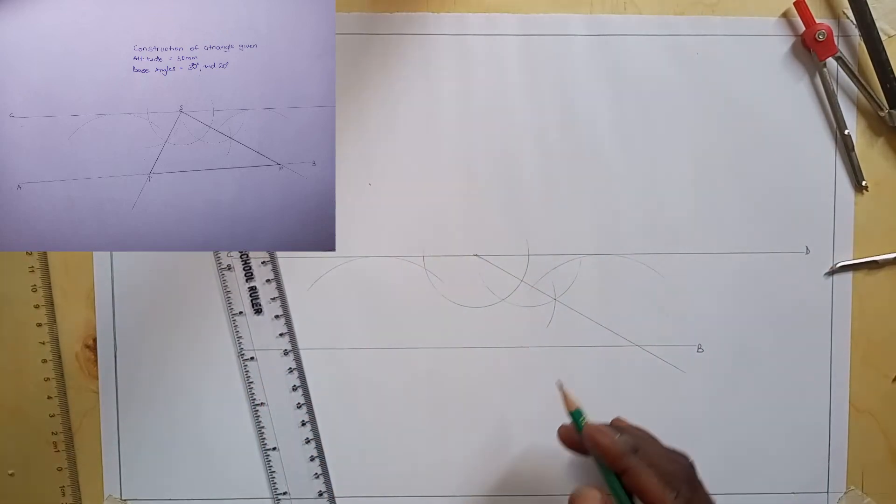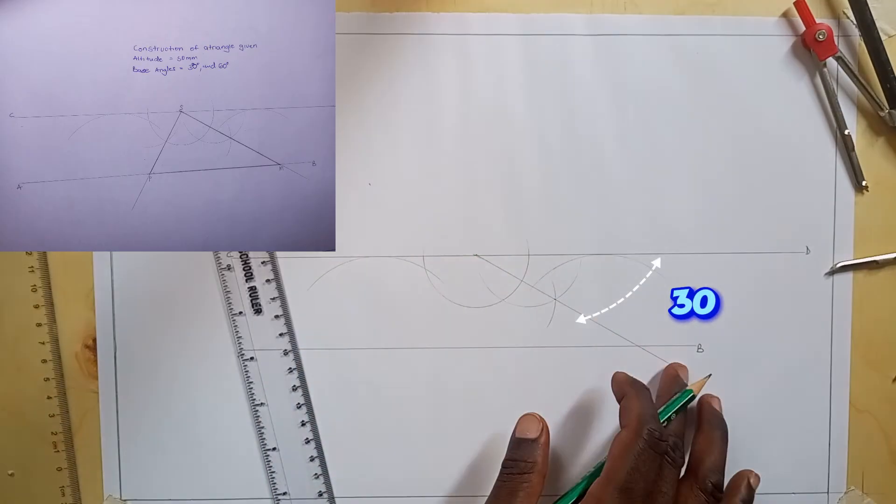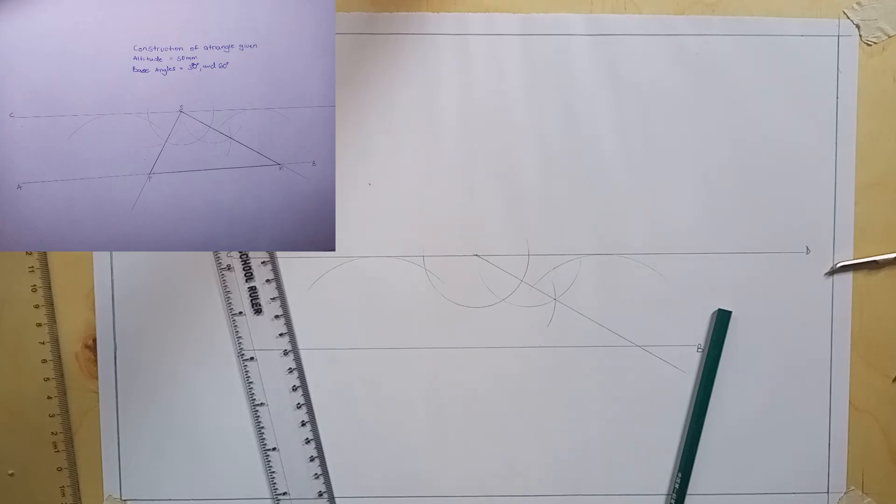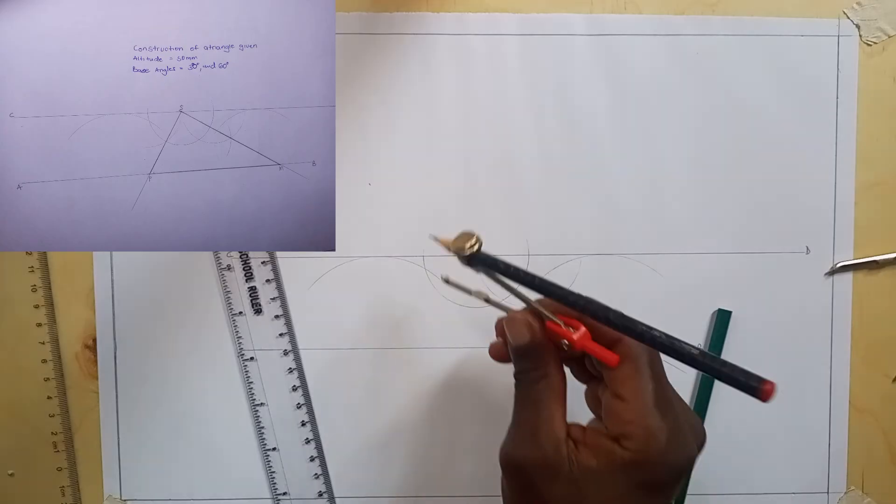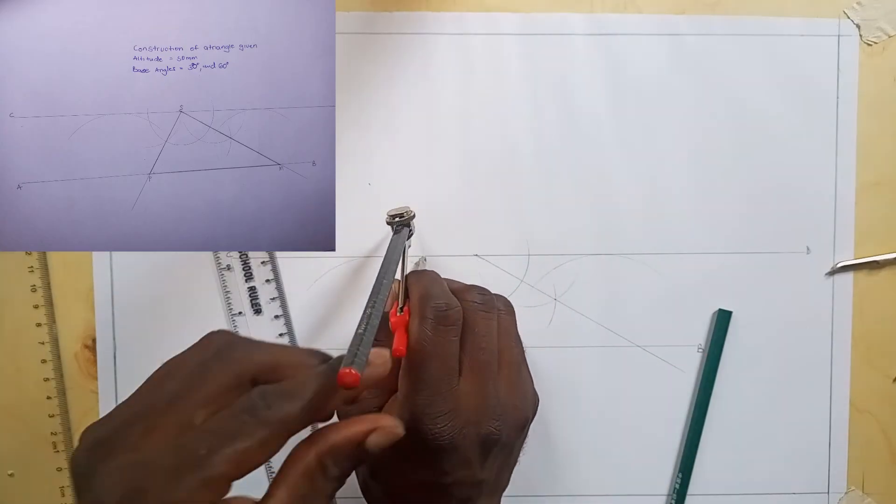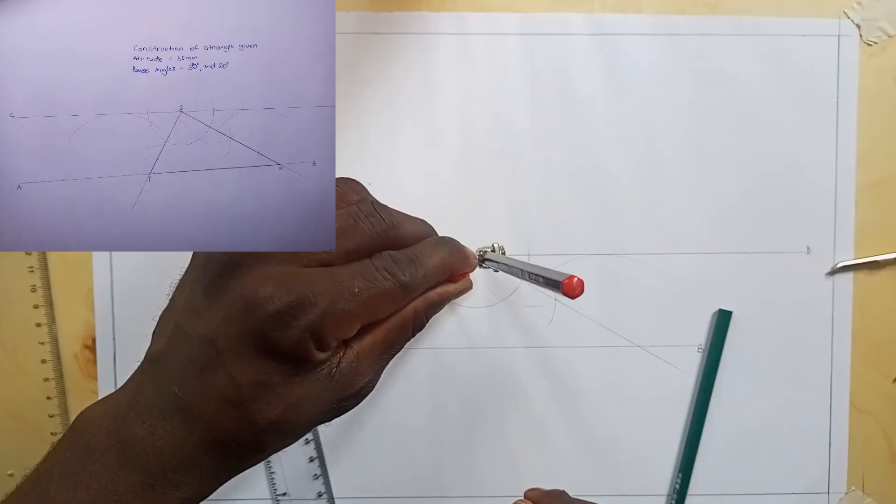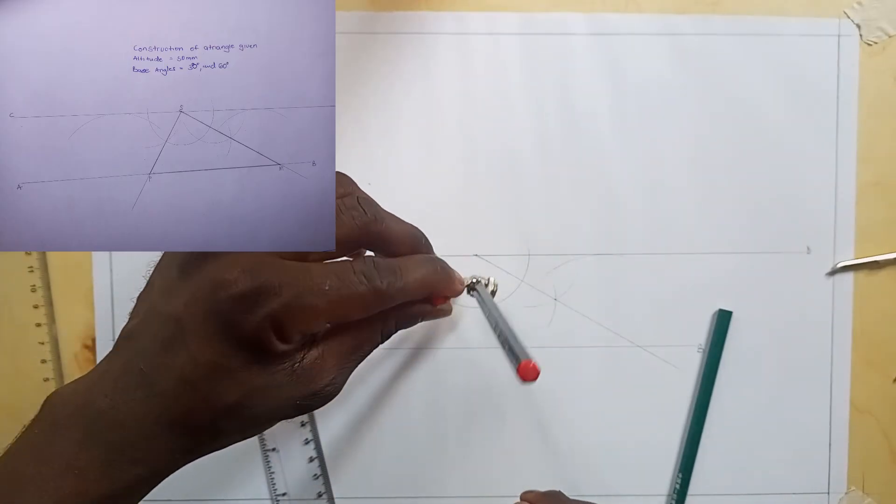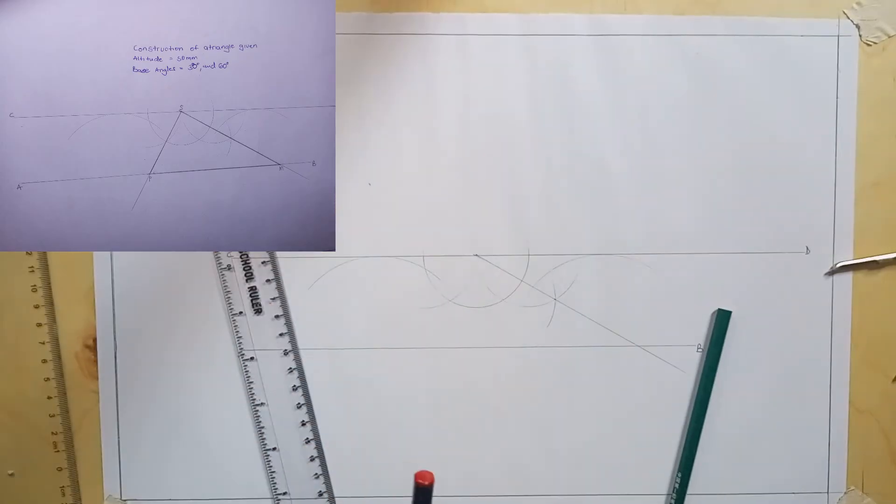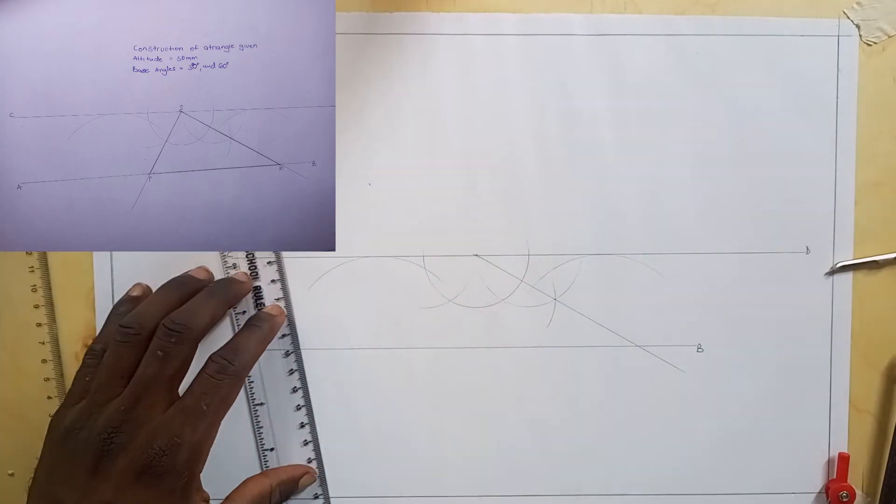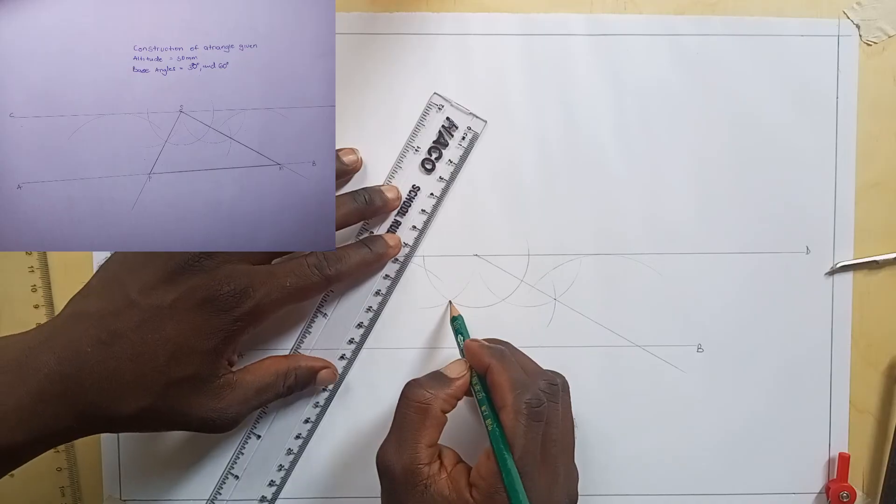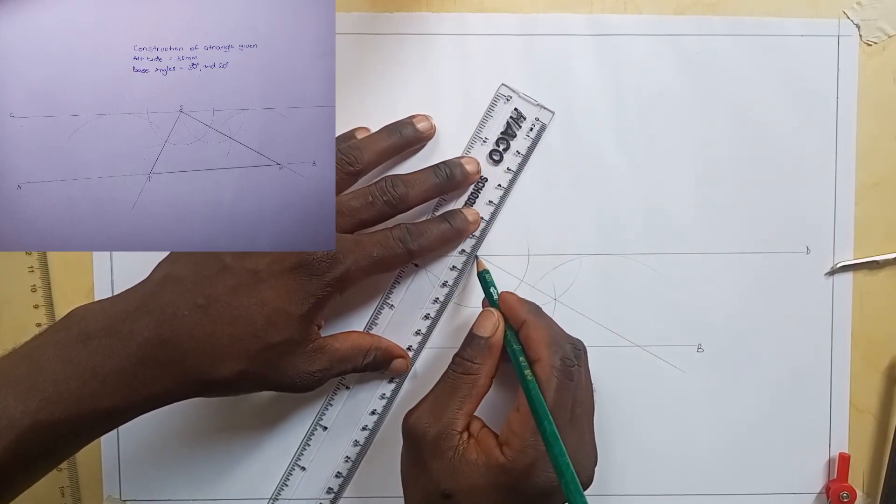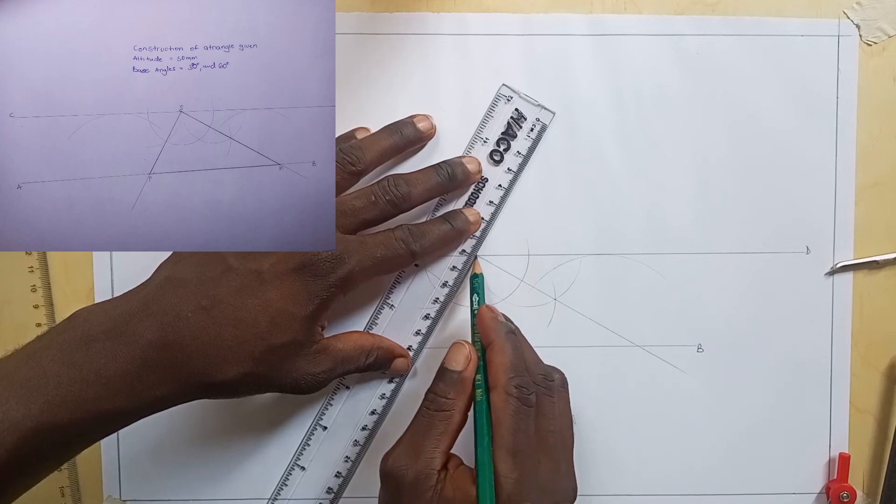So we draw our 30 degree angle here. Then the next angle that we are going to draw is 60. I also join this point to this point to draw our angle of 60.